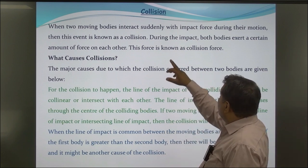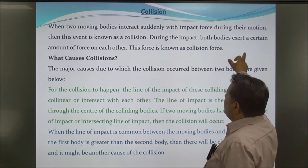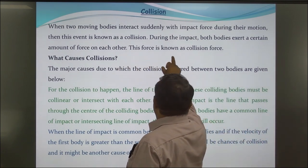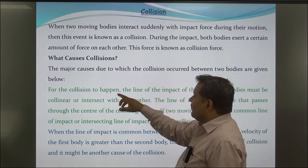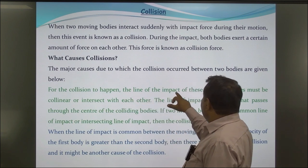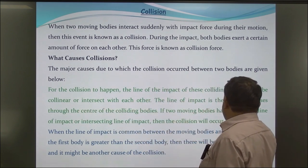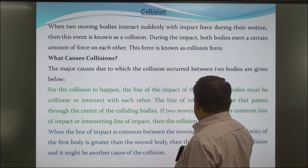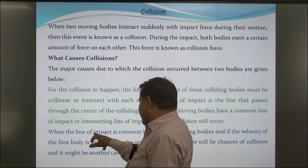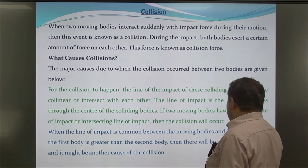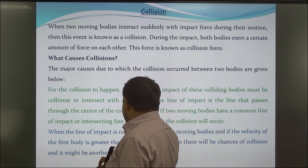Collision: When two moving bodies interact suddenly with an impact force during their motion, this event is known as a collision. During the impact, both bodies exert a certain amount of force on each other. For collision to happen, the line of impact of the colliding bodies must be collinear or intersect with each other. The line of impact passes through the center of the colliding body. If two moving bodies have a common or intersecting line of impact, collision will occur. Additionally, if the velocity of the first body is greater than that of the second body along the line of impact, collision may occur.